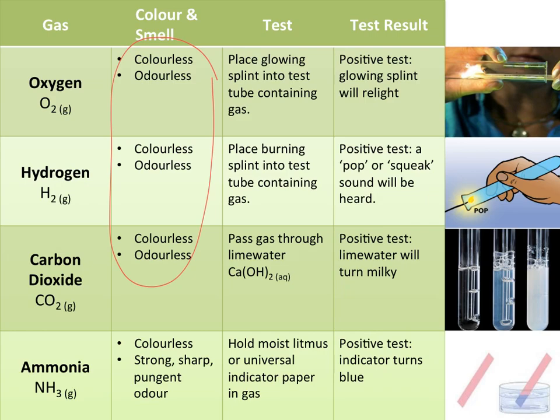Carbon dioxide and ammonia are interesting. If you put a lit splint into either one — the ammonia or the carbon dioxide — both of them will actually extinguish the flame. So it's not a definitive test for carbon dioxide.